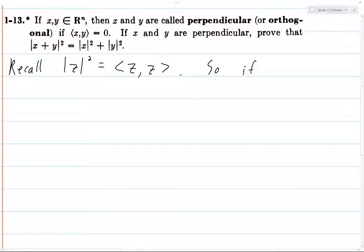So if the inner product of x and y is zero, then what is the norm of x plus y squared? So this is the inner product of x plus y with x plus y.